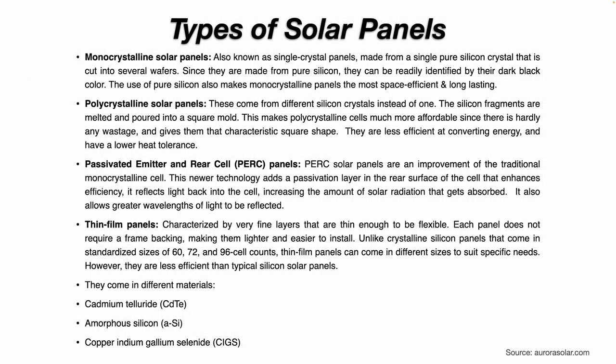Different types of solar panels. Monocrystalline solar panels, also known as single crystal panels, are made from a single pure silicon crystal that is cut into several wafers. Since they are made from pure silicon, they can be readily identified by their dark black color. The use of pure silicon also makes monocrystalline panels the most space efficient and long lasting.